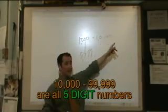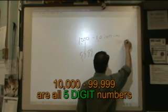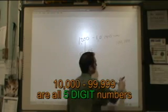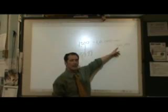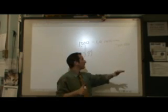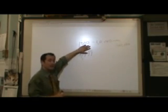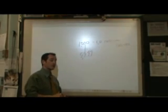And from 10,000 to the next number is 100,000. How many digits is this one? This is a six-digit number. 10,000 are called five-digit numbers, and 1,000 we learned before for a four-digit number.